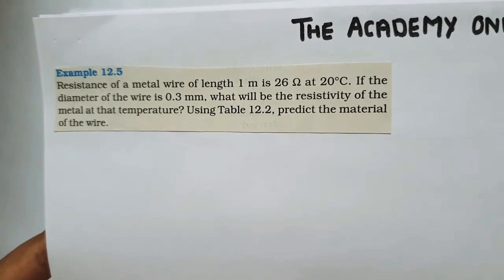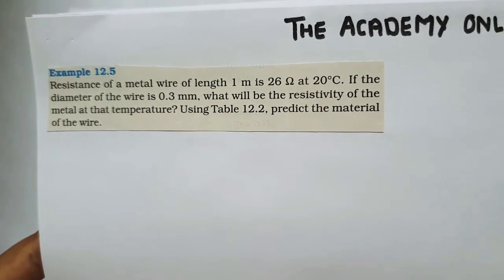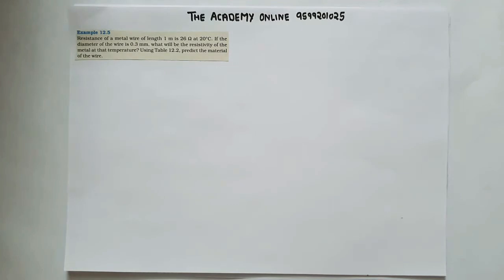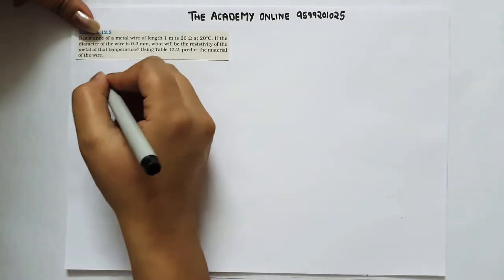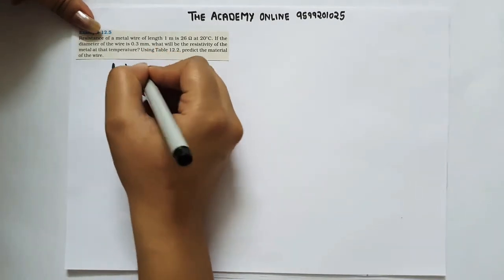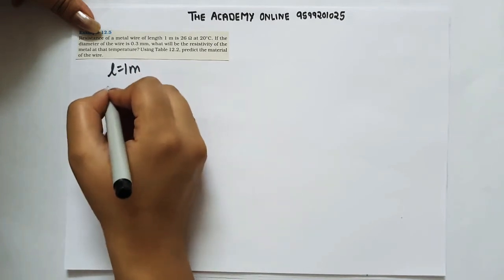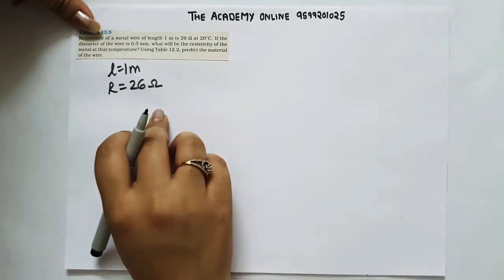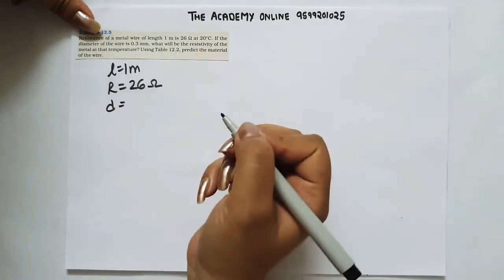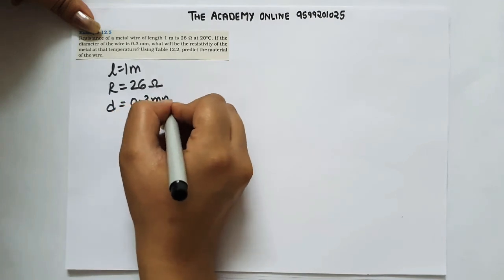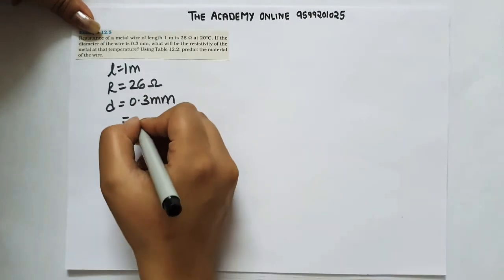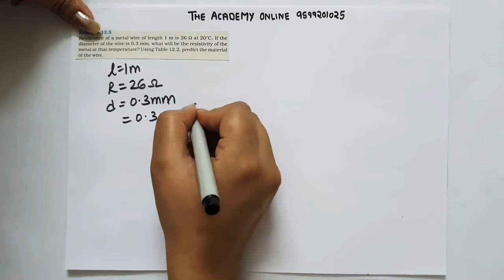R is equal to rho L by A, so rho equals R into A upon L. Area is equal to pi R squared. The diameter is 0.3 mm, so radius is 0.15 mm, which converts to 0.3 into 10 to the power minus 3 meters.